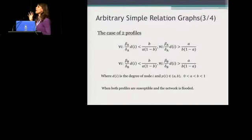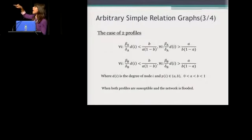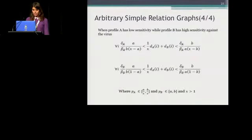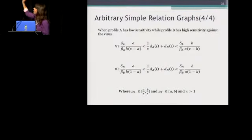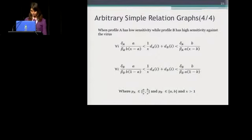This is a different approach to characterize the state — we impose that all nodes should have a degree within some range A and B. In the case where we want one profile to have high sensitivity while the other has low sensitivity, these are also the conditions that should hold. D is the degree of every node in the network.